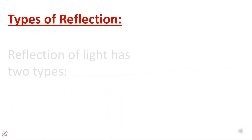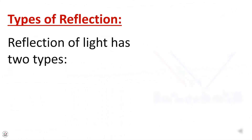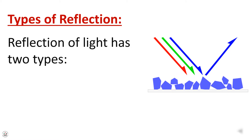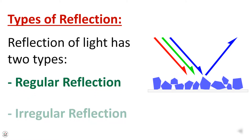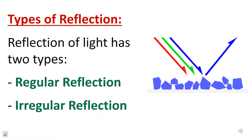Reflection of light has two types: the first one is regular reflection, and the second one is irregular reflection.